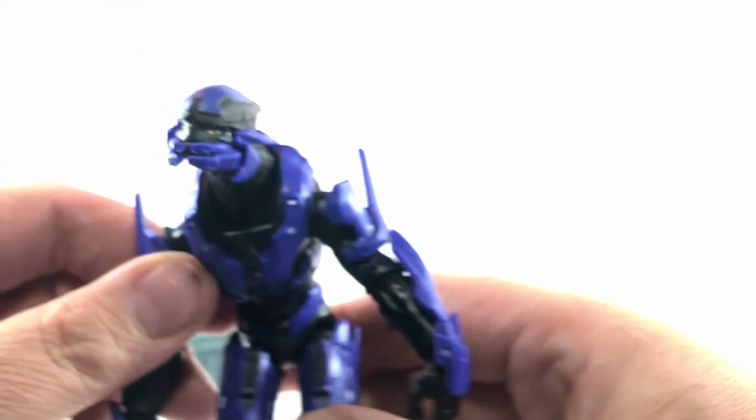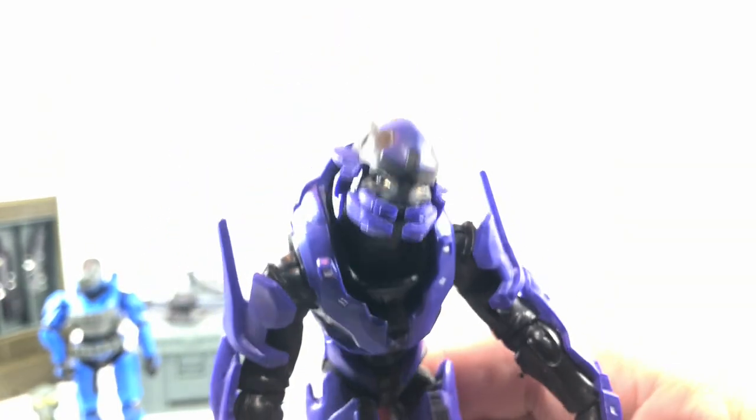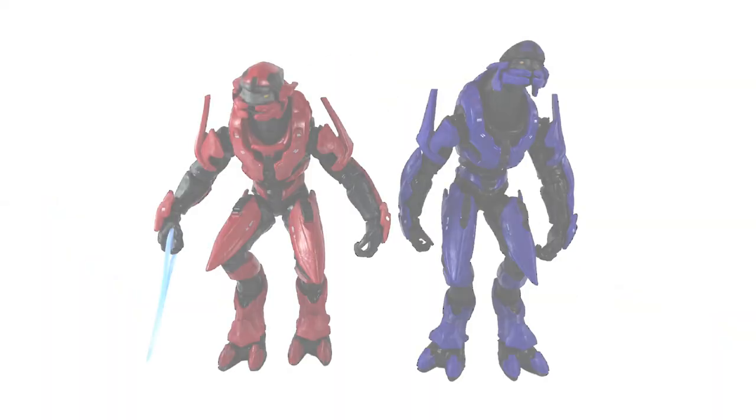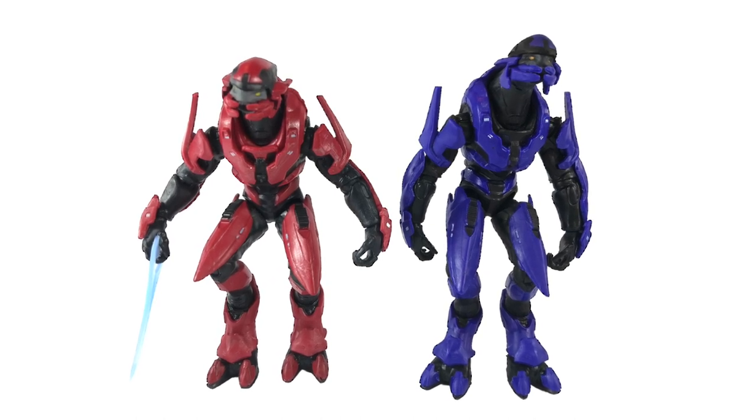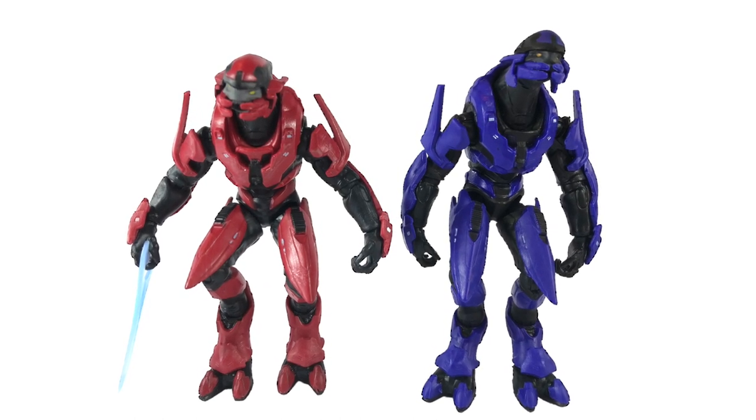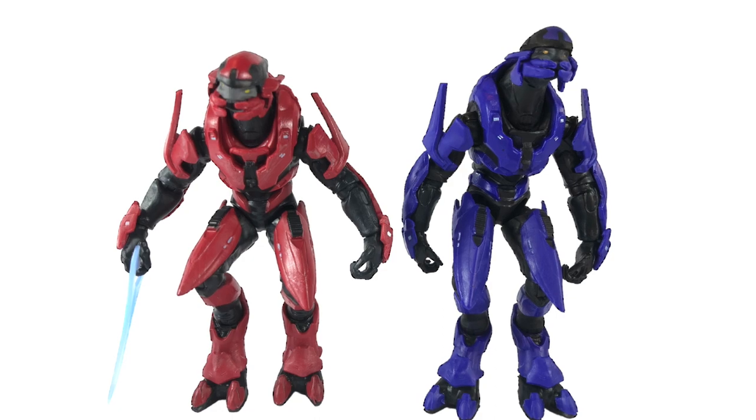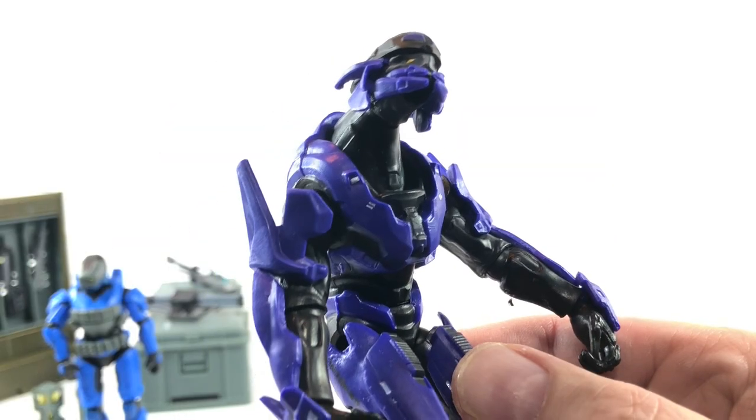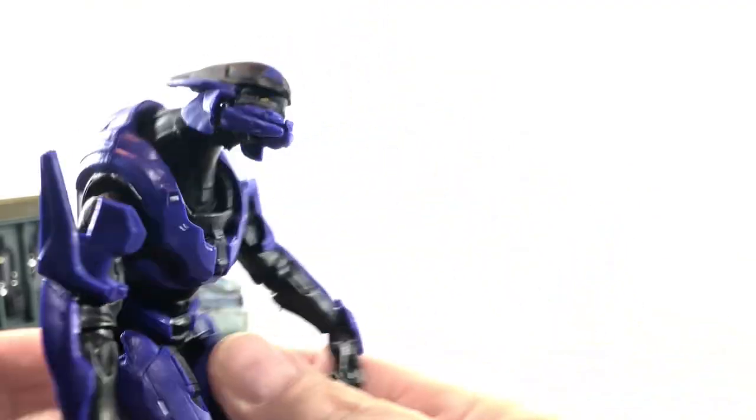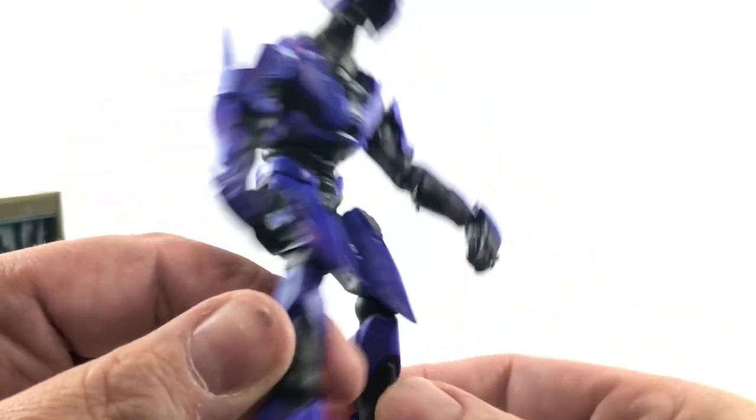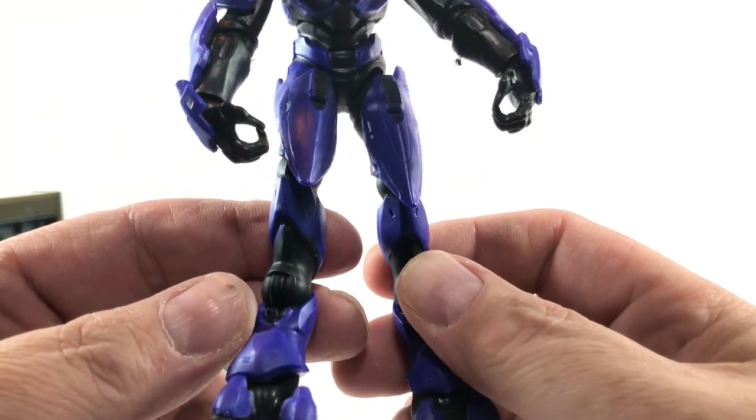And then we've got this purple elite. The exact same mold as a figure we saw in the three pack recently. Let's compare them side by side. They really do look like fantastic brothers in arms there. The red from the banished three pack with the energy sword, and the purple from this new UNSC checkpoint. Some detailing on his light strips on his chest there.